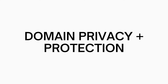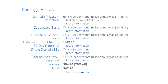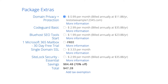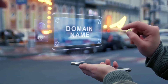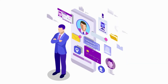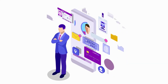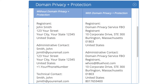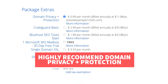All these Bluehost package extras are completely optional. First is domain privacy plus protection. I do recommend domain privacy plus protection as it'll keep your personal information private so that spammers and telemarketers won't have access to your personal information and contact you by phone and email with offers of their services. When you register a domain name, no matter what company you choose, the domain goes into the public Whois database. If you select domain privacy plus protection, it'll show Bluehost default contact information instead of yours. Highly recommend domain privacy plus protection.